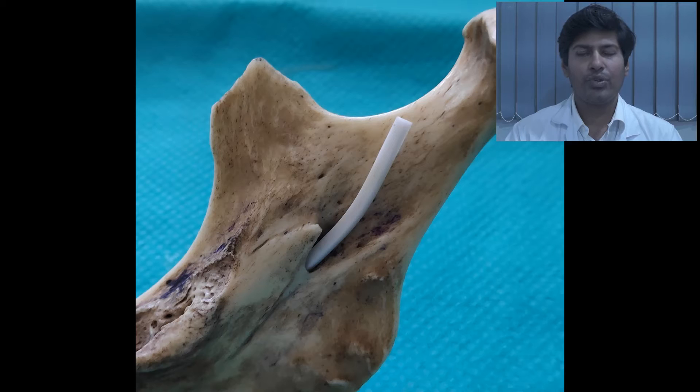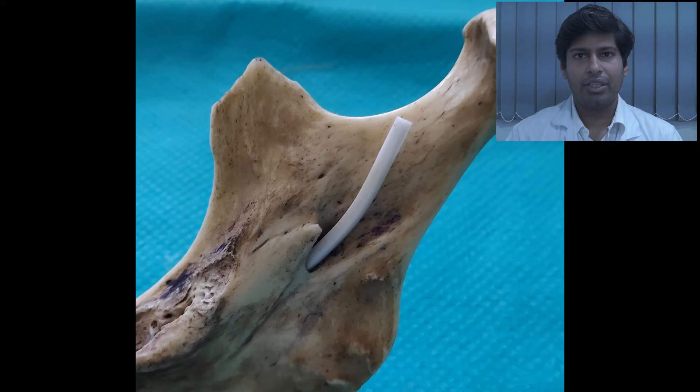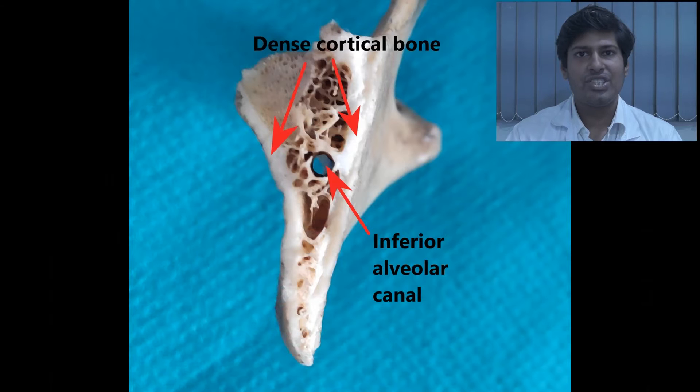The inferior alveolar nerve block technique is indicated when working with one or more mandibular teeth of the same quadrant, or for soft tissue procedures along the lingual mucoperiosteum, the floor of the mouth, the anterior two-thirds of the tongue, and the buccal soft tissue anterior to the mental foramen. This is a nerve block technique where the nerve trunk is anesthetized, as against an infiltration technique where terminal nerve endings are anesthetized. A nerve block is used here because once the fibers of the inferior alveolar nerve enter the mandibular foramen, they become inaccessible for local anesthetic delivery, being surrounded by dense cortical bone.